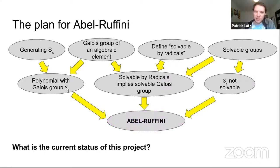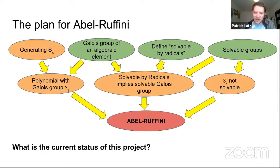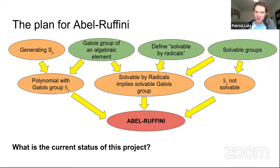What's the current status? We've done all the easy parts and we're working on all the hard parts and haven't finished yet. The ones in green are basically totally done. The ones in orange are at some level of completion. The main part of the proof — solvable by radicals implies solvable Galois group — we're in the middle of that, and the others are reasonably close to being done.